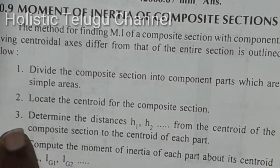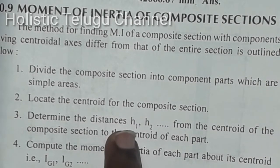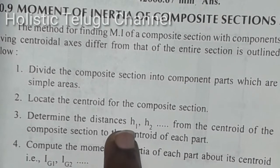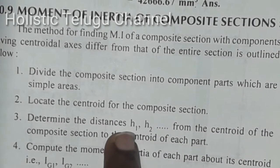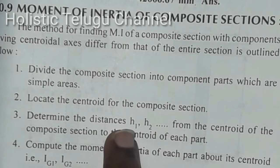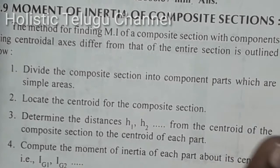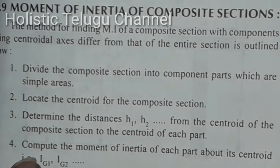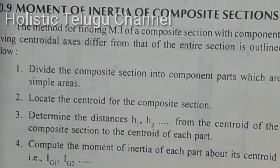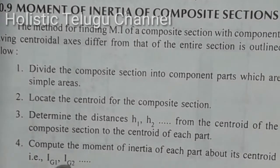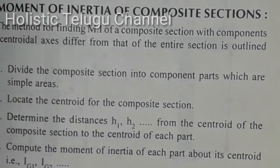Third point: determine the distance. This means to identify the distances H1, H2, H3 for each part. Then calculate the moment of inertia of each part about its own centroid: Ig1, Ig2, and so on.